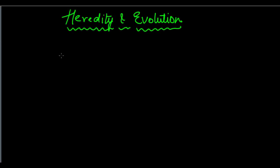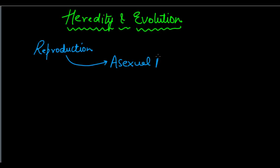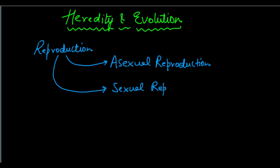While studying Reproduction — the process by which an organism multiplies itself to form offspring — we saw that there are two kinds of reproduction: asexual reproduction and sexual reproduction. Asexual reproduction involves only one parent; we don't have two parents involved in the process. Just one parent gives rise to numerous other organisms by various methods.